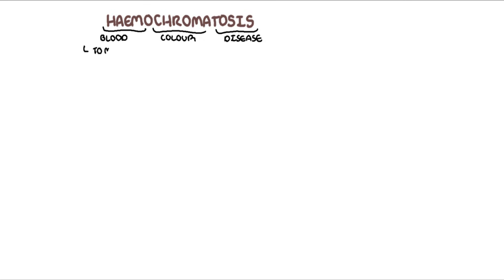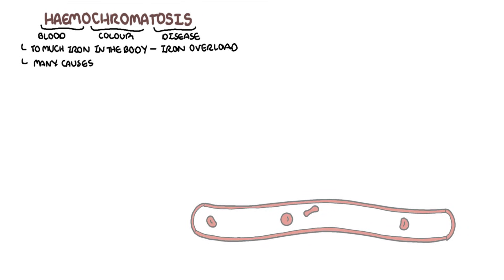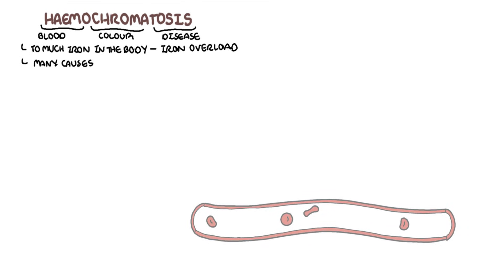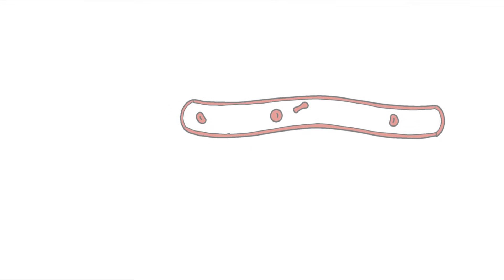Hemochromatosis is essentially when you have too much iron in your body, you have iron overload. There are many causes. You can have primary, which is hereditary hemochromatosis, or secondary hemochromatosis.